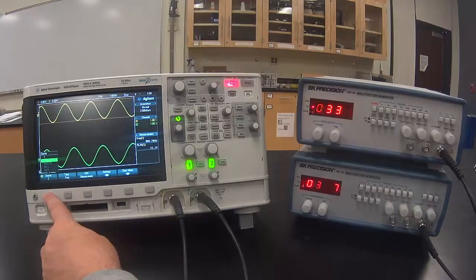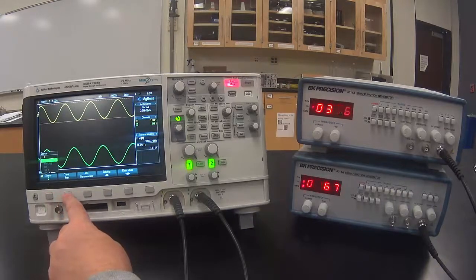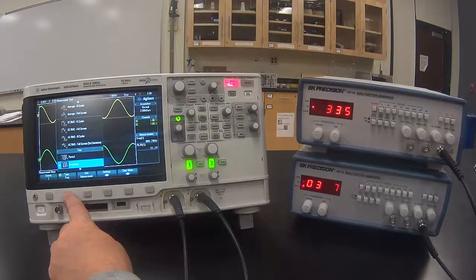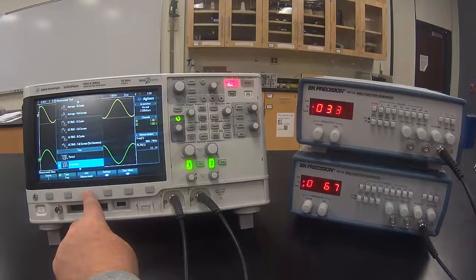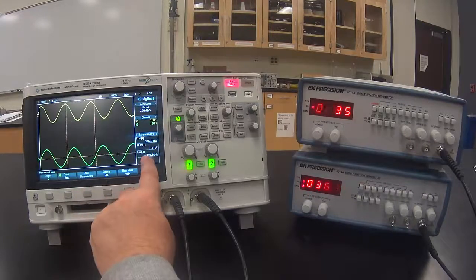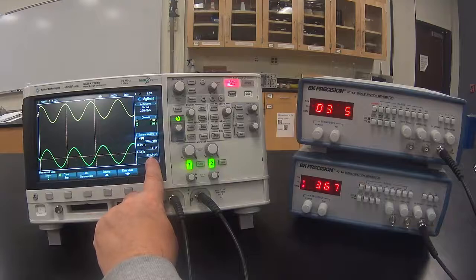Then you can select first of all frequency, and then add measurement. You see frequency for channel 2 has appeared.